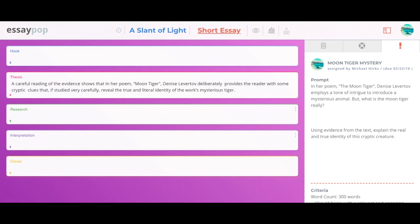Here's what I came up with for my essay: A careful reading of the evidence shows that in her poem Moon Tiger, Denise Levertov deliberately provides the reader with some cryptic clues that, if studied carefully, reveal the true and the literal identity of the work's mysterious tiger. You can see it mirrors the prompt, it's short, it's concise, and it tells me what I'm going to do in my essay.